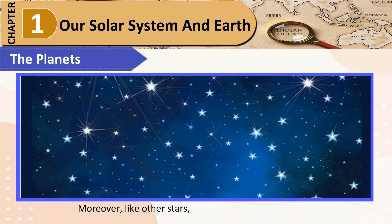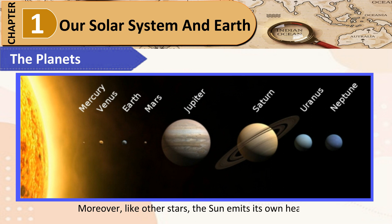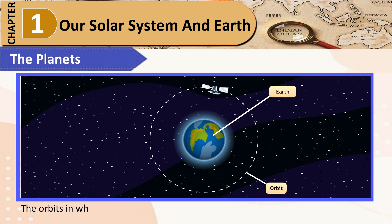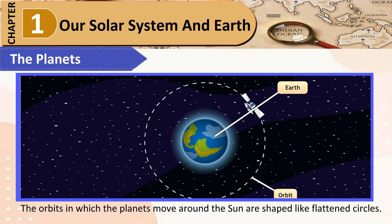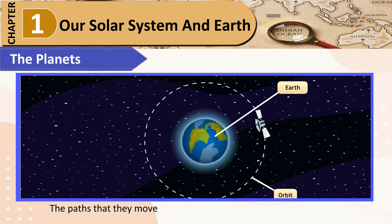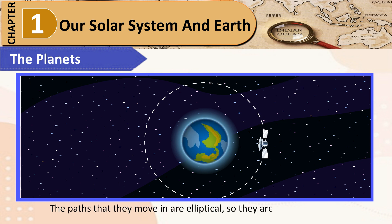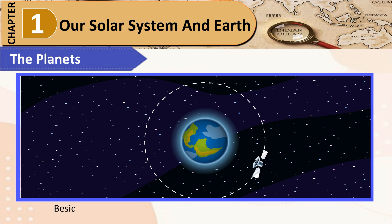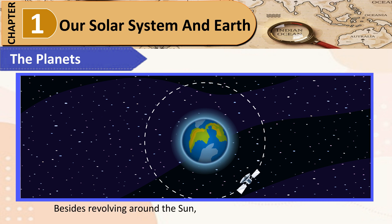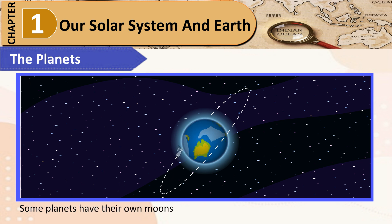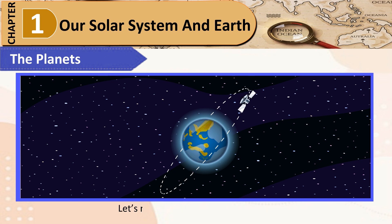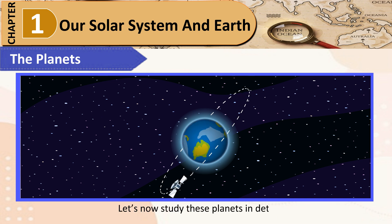Like other stars, the Sun emits its own heat, and planets receive this heat from it. The orbits in which the planets move around the Sun are shaped like flattened circles — elliptical, so they are also called ellipses. Besides revolving around the Sun, each planet also rotates on its axis. Some planets have their own moons or smaller celestial bodies orbiting around them.